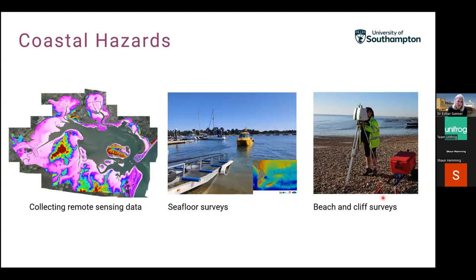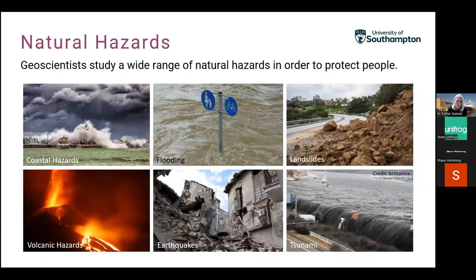Geoscientists use remote sensing data, seafloor surveys making maps of the sea floor, and beach and cliff surveys — monitoring whether cliffs are actively moving or at risk from collapse. Beyond coastal hazards, geoscientists study a wide range of natural hazards: flooding from rivers inland, landslides and sediment avalanches — which is my own research — volcanic hazards, and earthquakes at subduction zones, which produce the largest earthquakes on our planet and can generate devastating tsunamis.